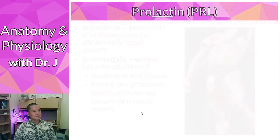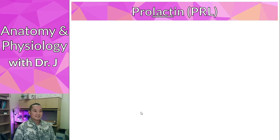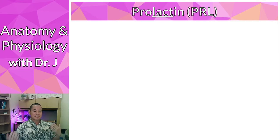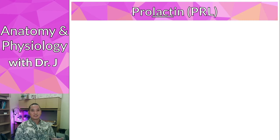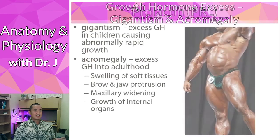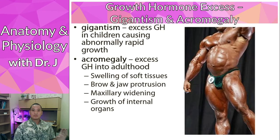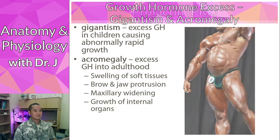Moving on to prolactin — but this is why growth hormone is notable: you have growth hormone releasing hormone triggering growth hormone going straight into circulation, and as you can see it targets many different organs and tissues.